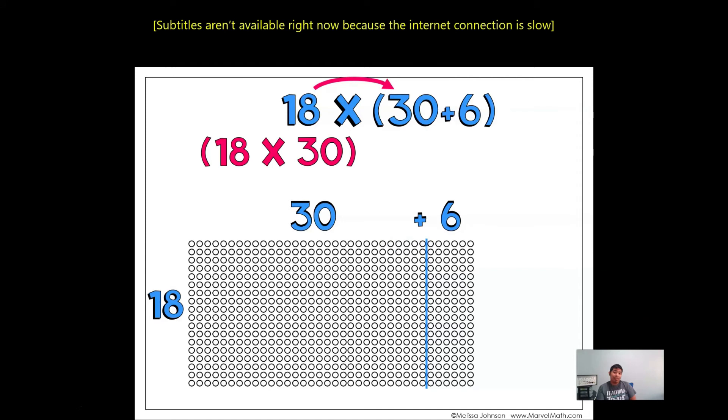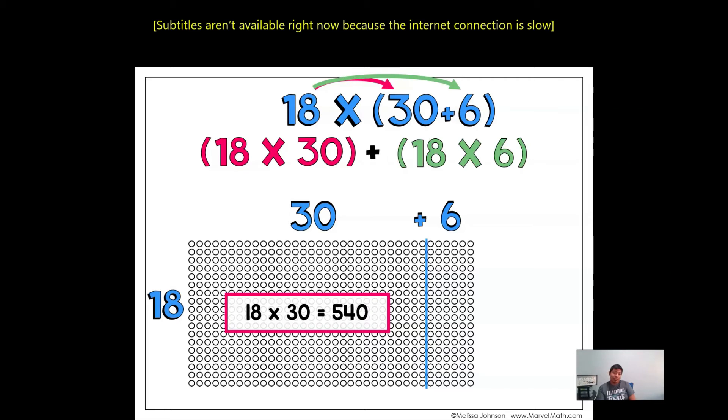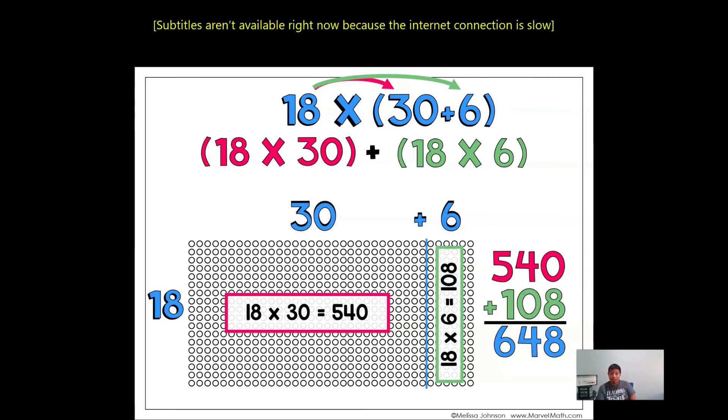Next, we just multiply 18 times 30, which equals 540. And then 18 times 6, which equals 108. Then we add up 540 plus 108, which equals 648.